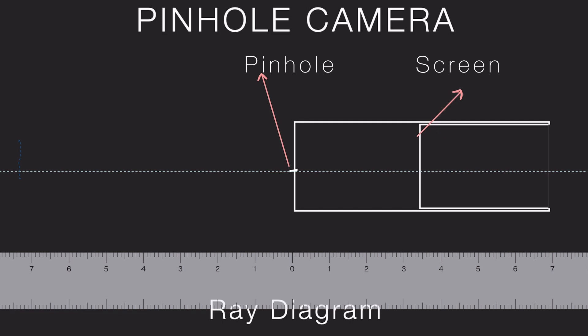Now we need an object. In our earlier example, we used a candle, so let's place one here. This is how you draw the object—just an arrow. I'll call the top of the candle, the top of the object, A, and the bottom B.